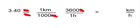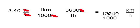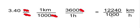I'll multiply the top, so 3.4 times 3,600. And the bottom, 1,000 times 1. We end up getting 12,240 divided by 1,000.